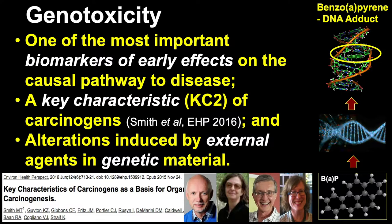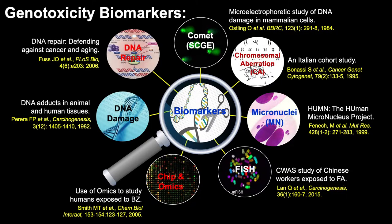Genotoxicity is also a key characteristic of almost all types of carcinogens. If you want to learn more about key characteristics, I recommend you go to the EHP paper — this project was led by Dr. Martin Smith from Berkeley, who collaborated with many of our members. Most recently, EHP also published two more key KC papers on male and female reproductive endpoints.